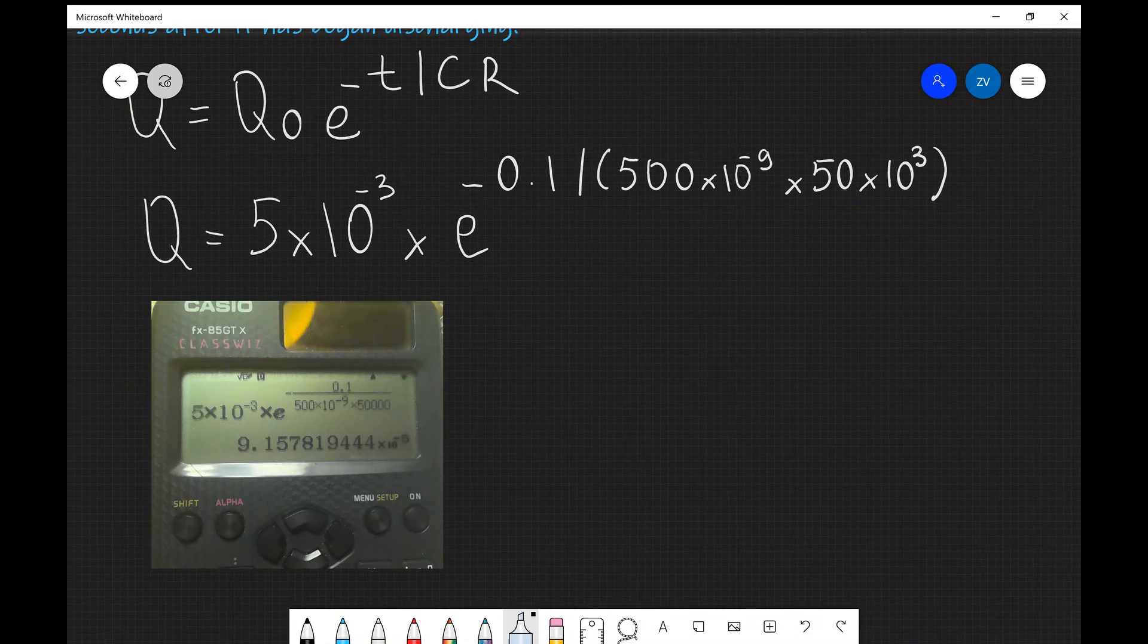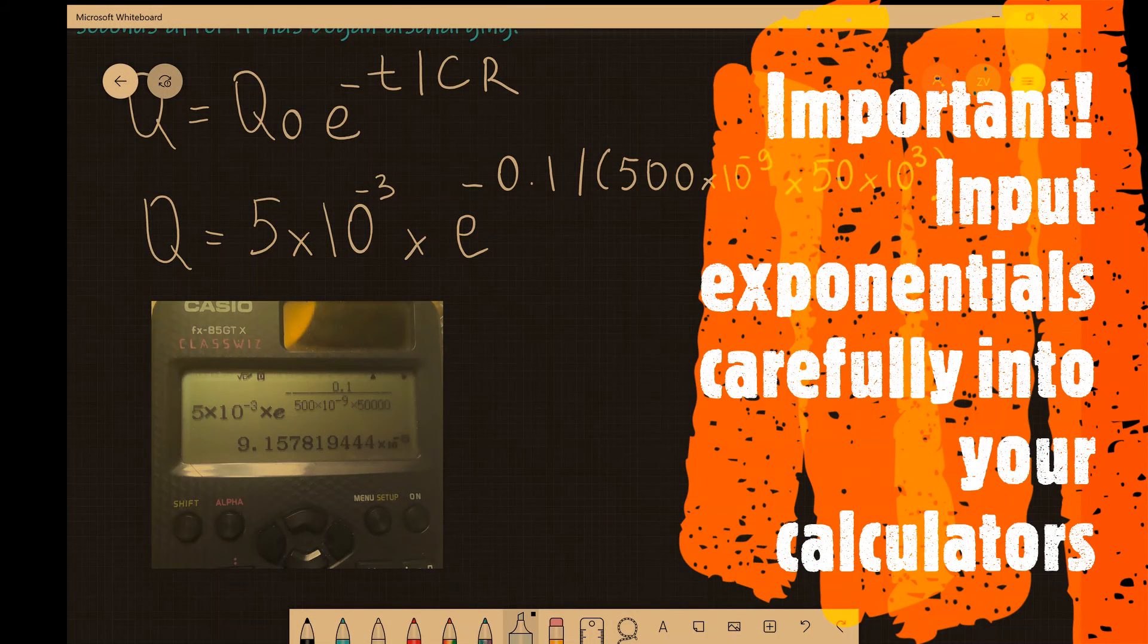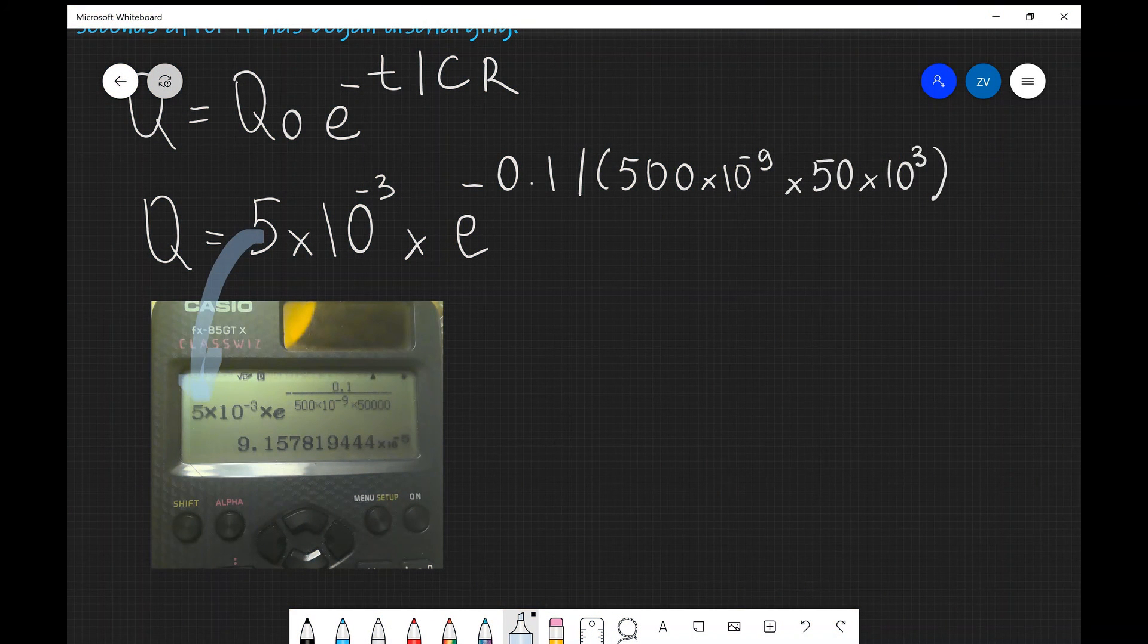Now for this example, I thought it would be really appropriate if I showed you guys exactly how I input things into my scientific calculator. I firmly believe that it's by far the best to actually input everything in at once in the following form. You can see how the 5 × 10^(-3) goes here, you can see the exponential function and how I fitted everything in using the fraction feature of the calculator.